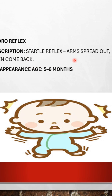The first reflex is the Moro reflex. It is a startle reflex — arms spread out, then come back. The disappearance age is 5 to 6 months.